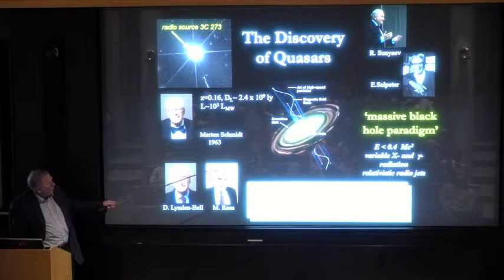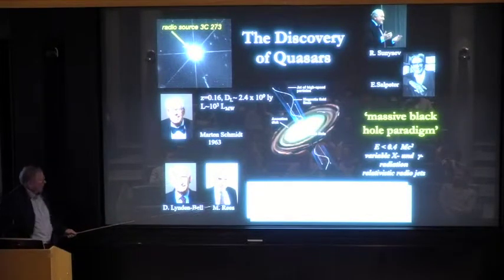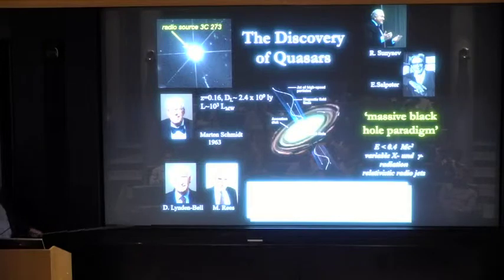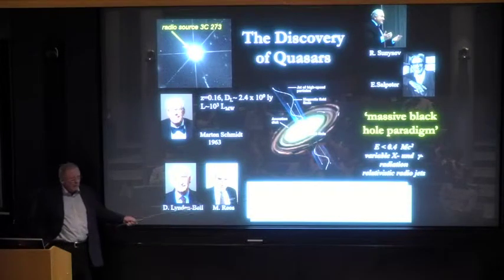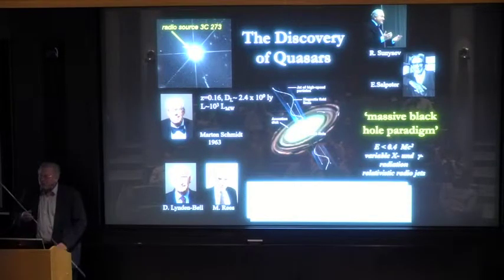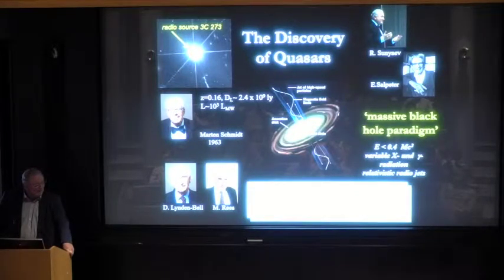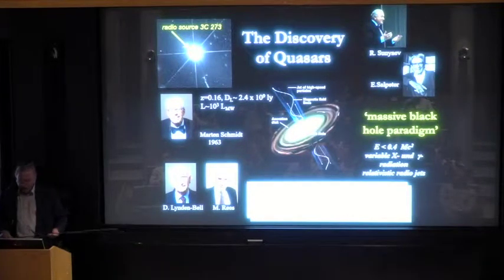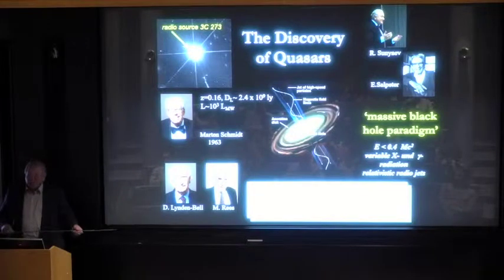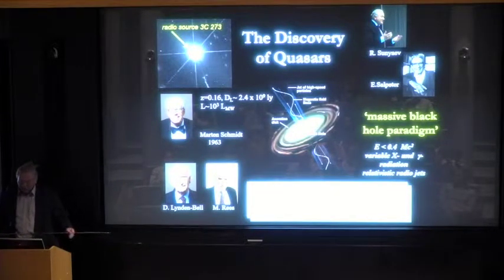That's why the massive black hole paradigm, already in the early 70s, here's a famous paper by Lynden-Bell and Rees, became sort of the mantra. It was assumed to be the most likely situation. But from assuming the most likely situation and telling everyone that you think it is, to proving it is, is a wide difference. In fact, it took quite a while until the first steps were taken to try to prove the concept of these massive black holes.